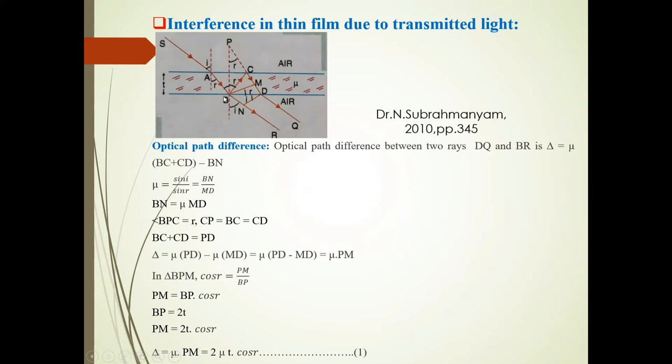Angle BPC is R. BC equals CD, so BC plus CD equals PD. Therefore, delta equals μ(PD minus MD), which equals μ times PM, since PD minus MD is PM.